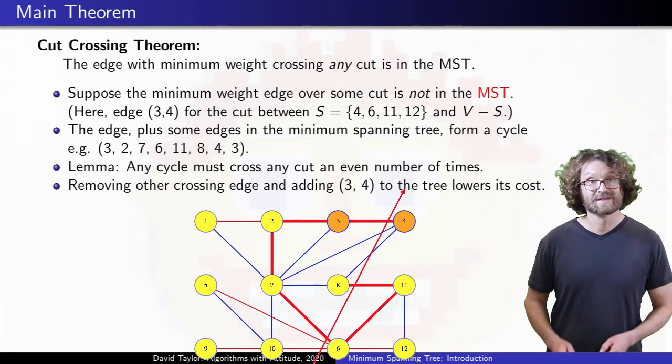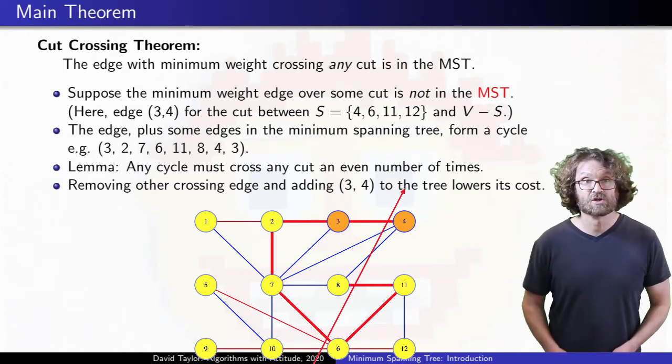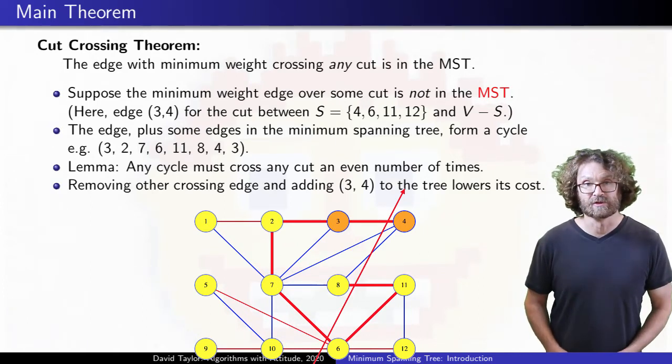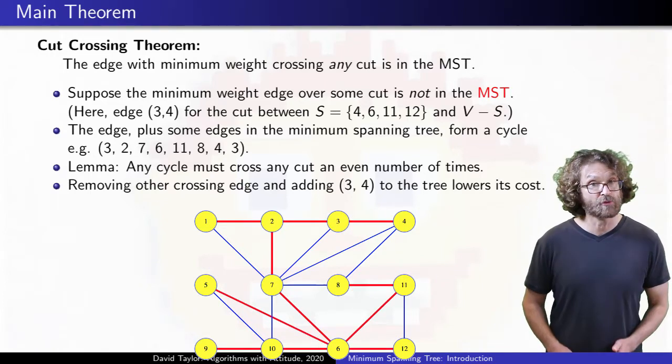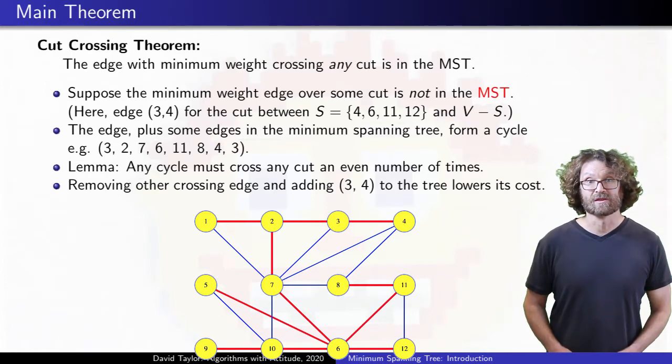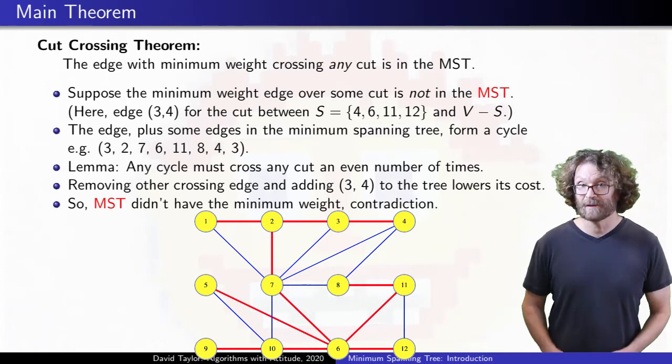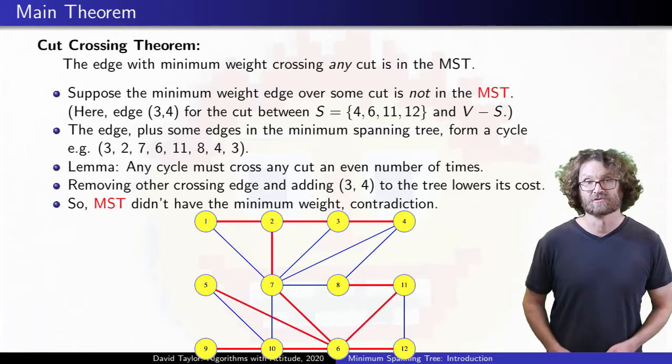But then, if we delete the 4-8 edge from the tree, and add the 3-4 edge, we get a new spanning tree, and its weight is less than the tree we had, which was supposedly a minimum spanning tree. The 3-4 edge being the minimum to cross a cut, and not being in the minimum spanning tree, gave us a contradiction.